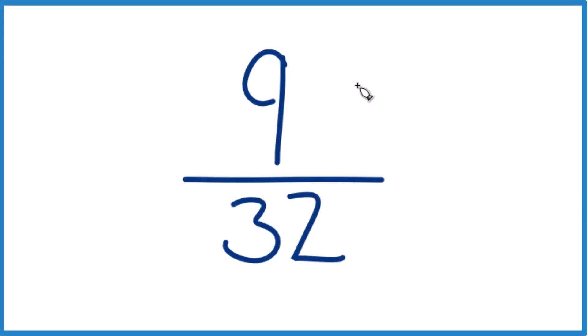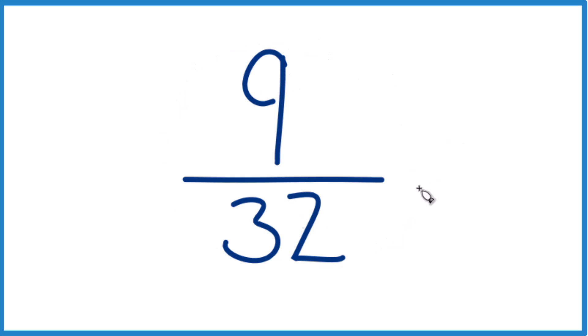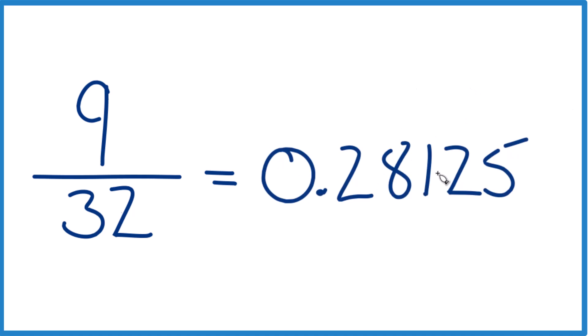Okay, so let's try to write 9 32nds as a decimal. So if you divided 9 by 32 on a calculator, that would give you this number right here. That's exact.